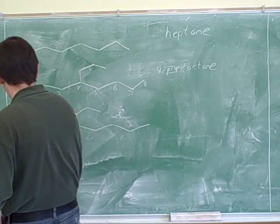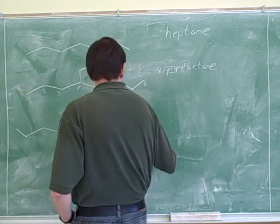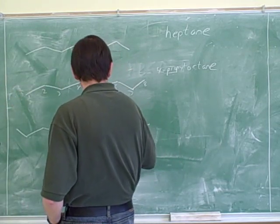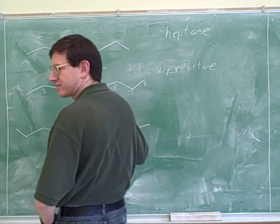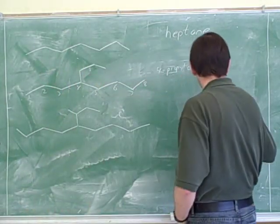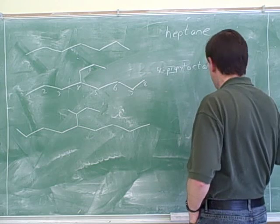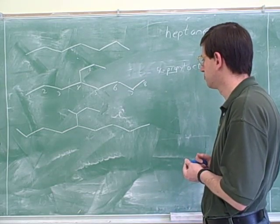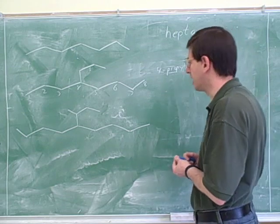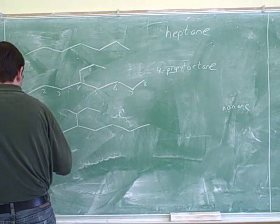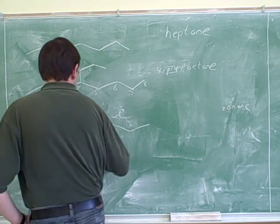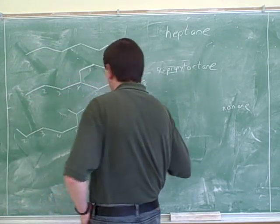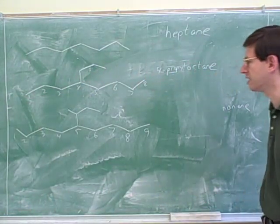So the parent chain will be a nonane and it'll be the line across the bottom. One, two, three, four, five, six, seven, eight, nine. Because if we do the other possibility, that would be one, two, three, four, five, six, seven, eight. And that would be shorter. Should we start the numbering from the left or from the right? It doesn't matter. In this case, it doesn't matter. But it's a really good idea to not be lazy and actually write down those numbers.